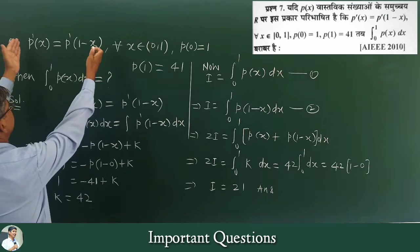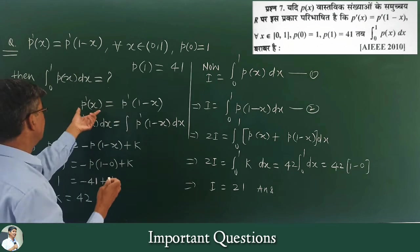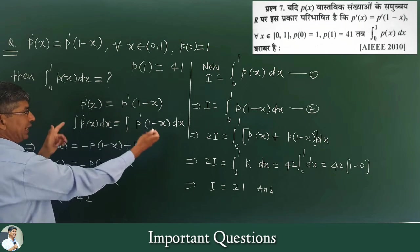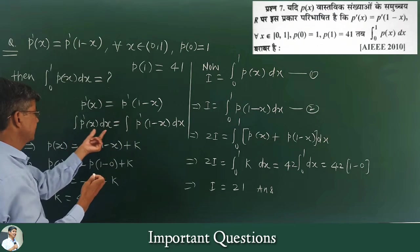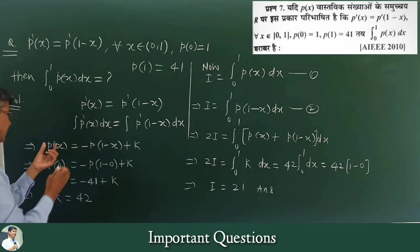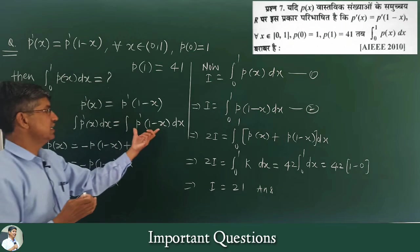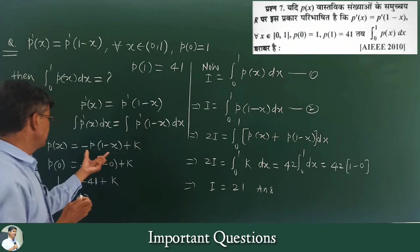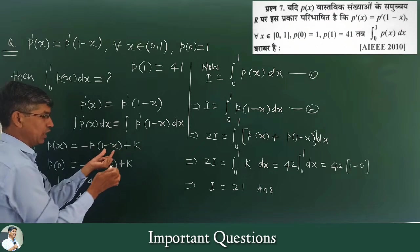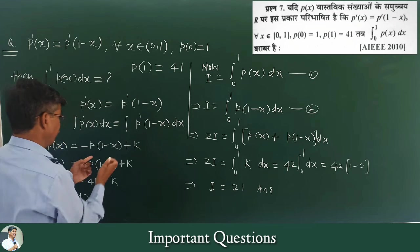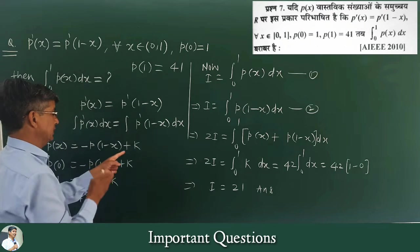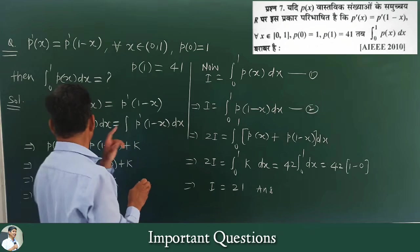Let's start. p'(x) is equal to p'(1-x). Integrating both sides: p'(x)dx and p'(1-x)dx. Now p'(x) integrates to p(x), and for p'(1-x), we change the order — the order of (1-x) gives minus x, so we get a negative sign plus a constant.